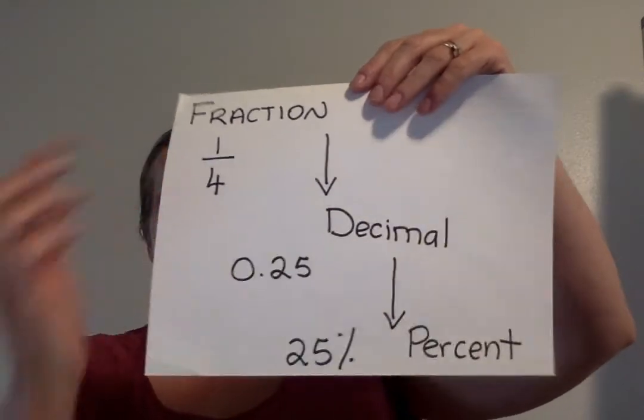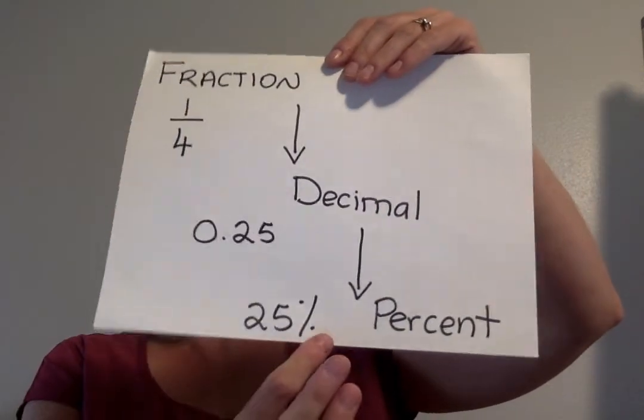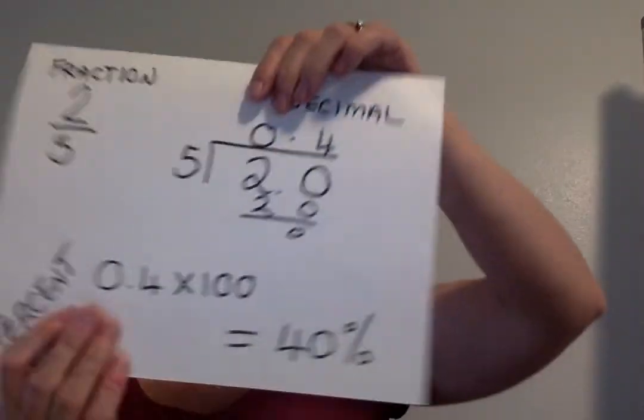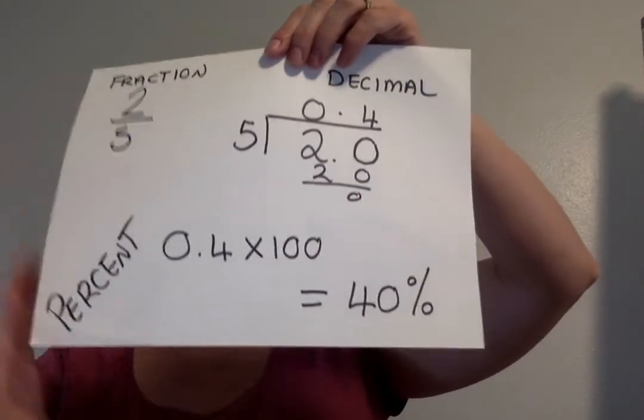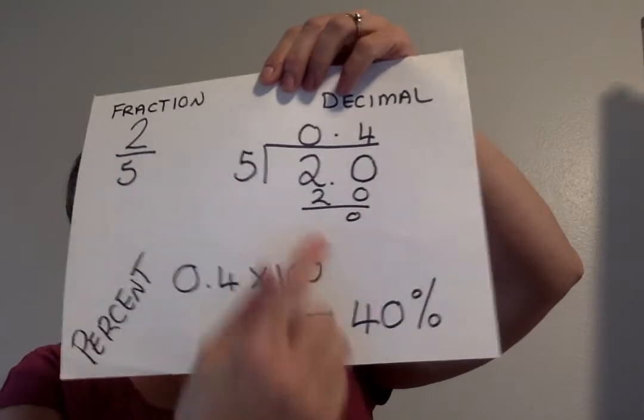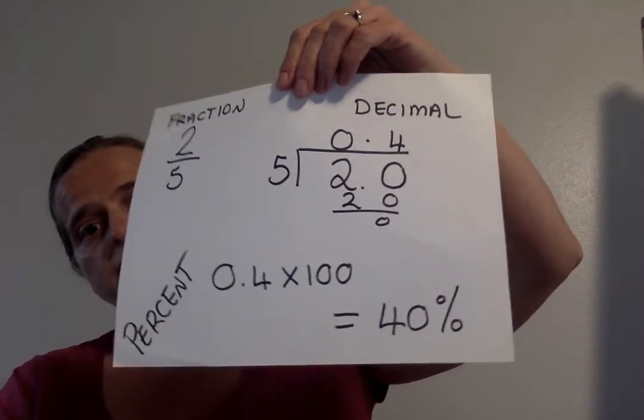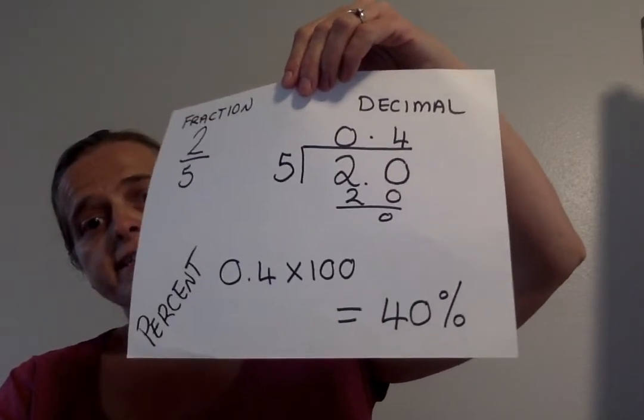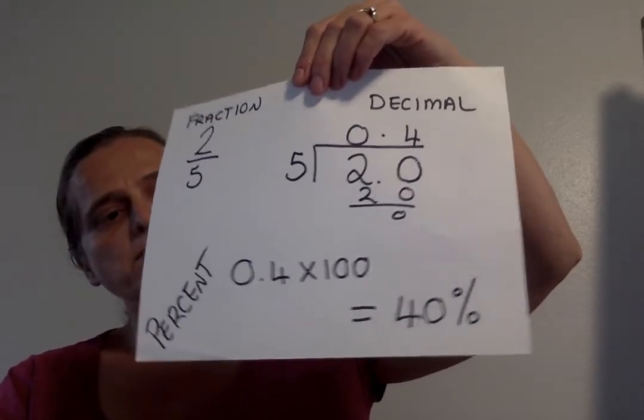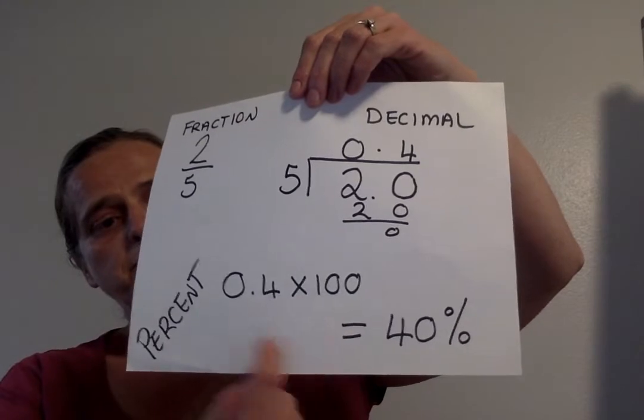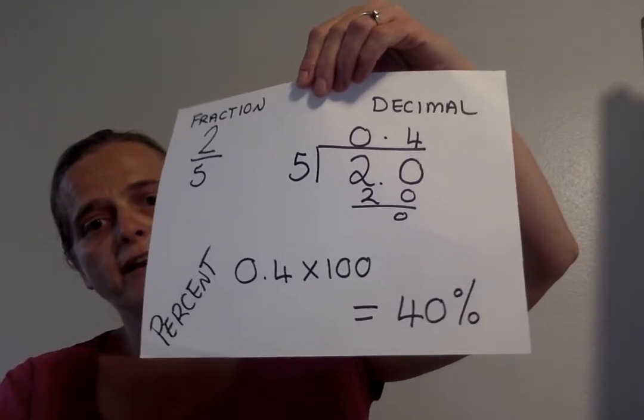How do we do that? We take a fraction, two-fifths. We put two in the dividend, five is your divisor, and then we divide. We get 0.4. Then we multiply by a hundred, and we get 40 percent. Come with me to the whiteboard.